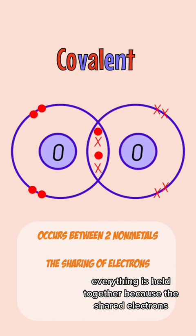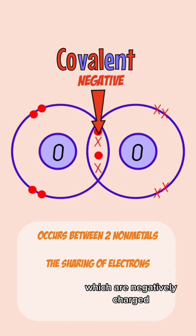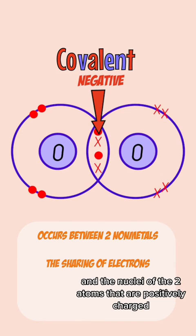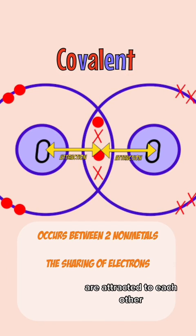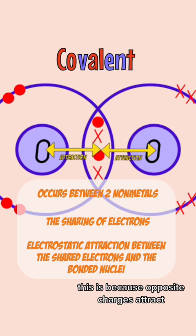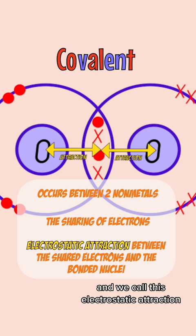Everything is held together because the shared electrons which are negatively charged and the nuclei of the two atoms that are positively charged are attracted to each other. This is because opposite charges attract and we call this electrostatic attraction.